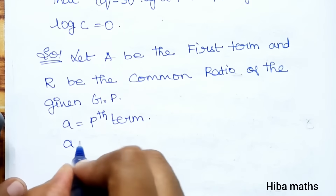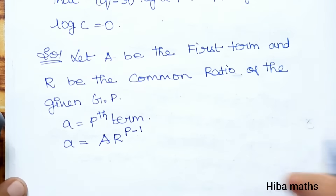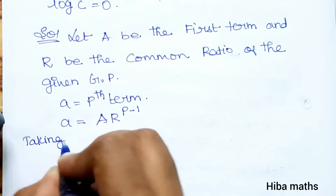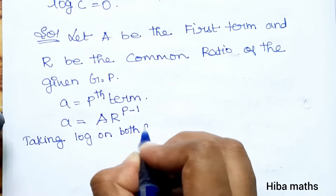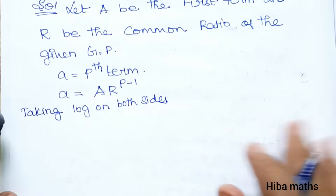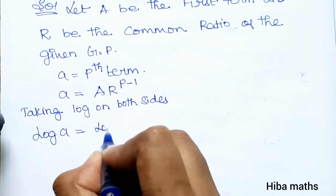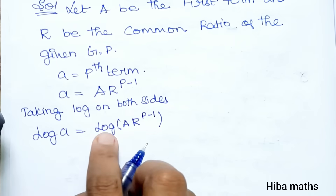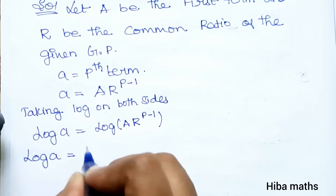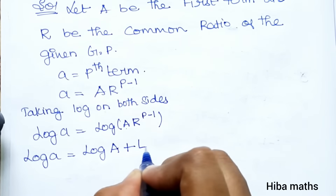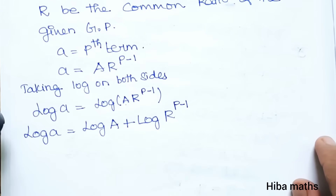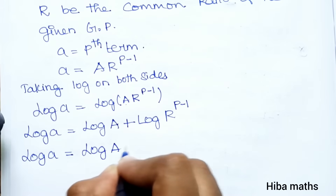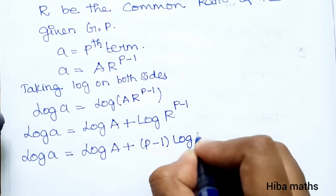A is equal to the Pth term, which means A equals A times R to the power (P minus 1). Taking log on both sides, log A equals log of A times R to the power (P minus 1).